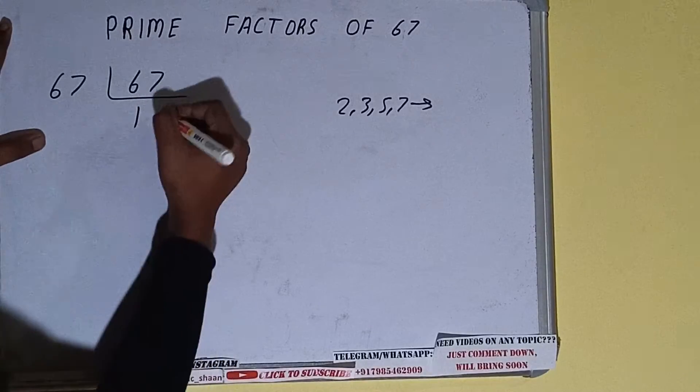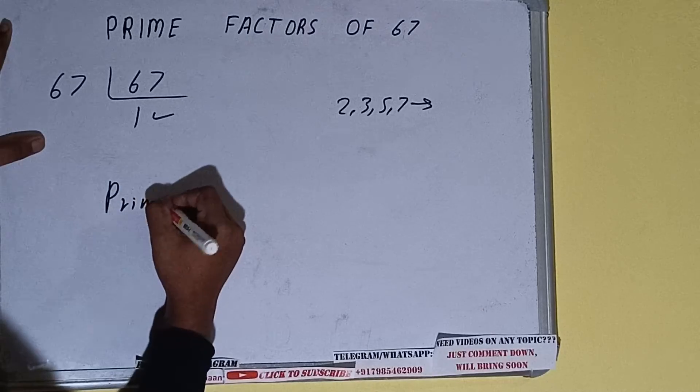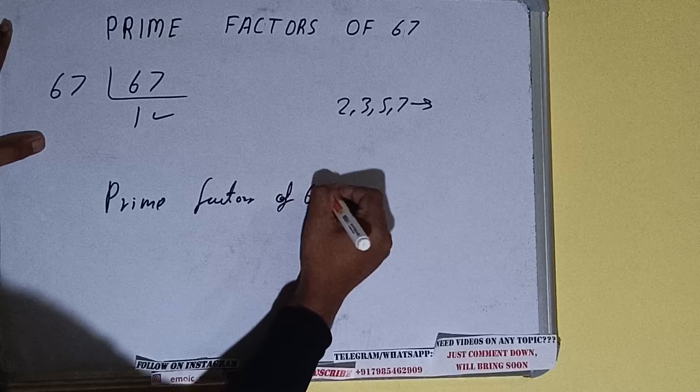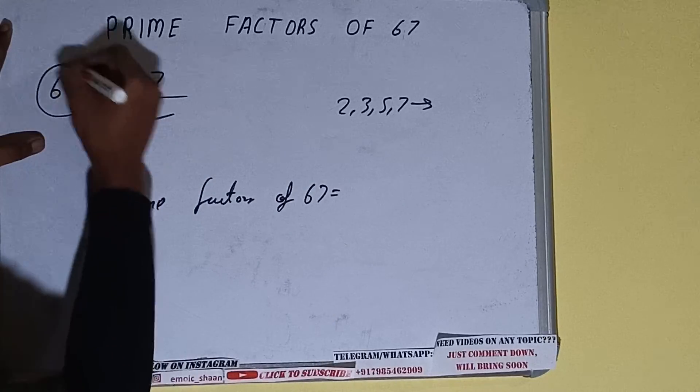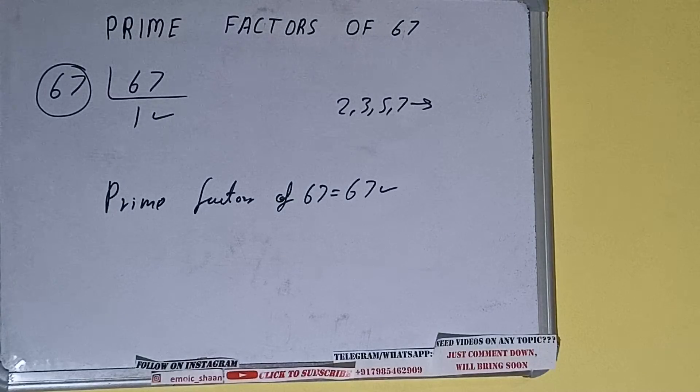Once we get 1, we need to stop and do one last thing. That is, prime factors of 67 equals whatever we have on the left-hand side, that is 67. That will be the answer. So this is all about prime factors of 67.